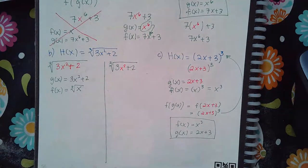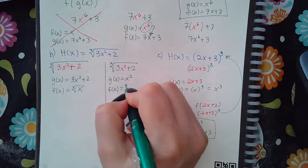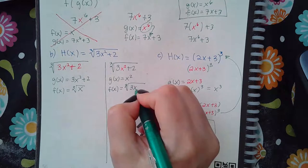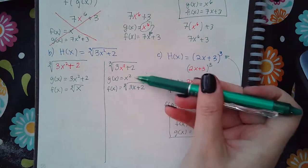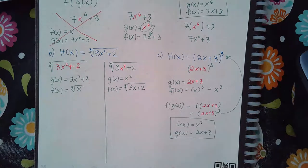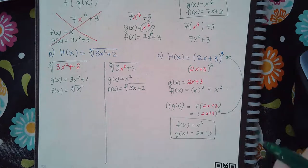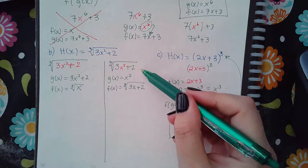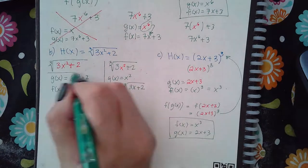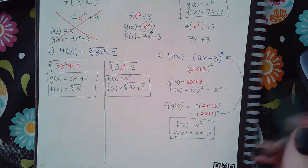There's another way to visualize this problem: g of x could be x squared and f of x could be the cube root of 3x plus 2, where instead of the red stuff I put x. Notice that f of x and g of x — neither one is literally just the variable x. This is also a correct answer, and plugging g into f gives 3 times x squared plus 2, which is exactly what we started with.